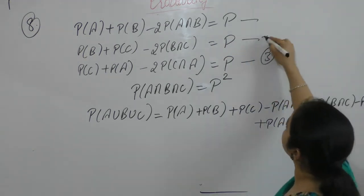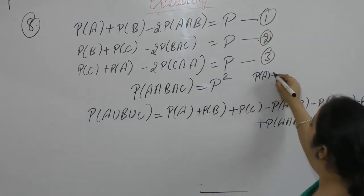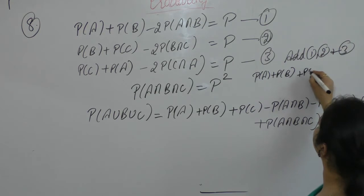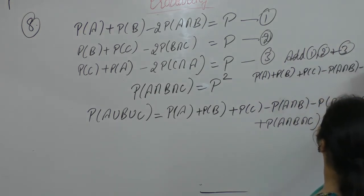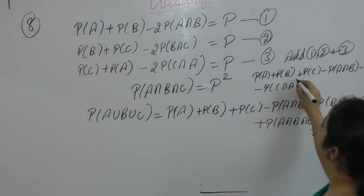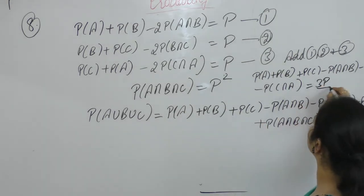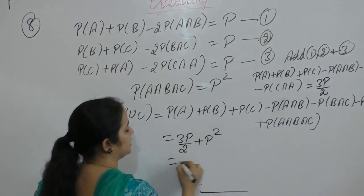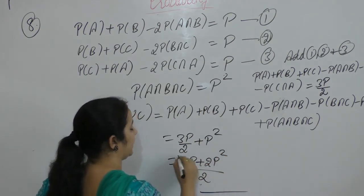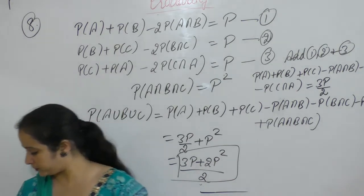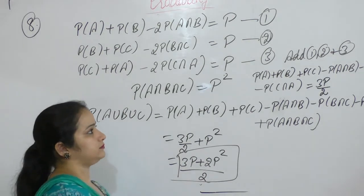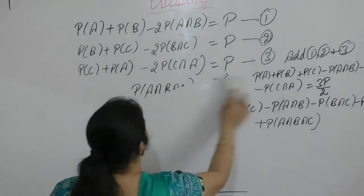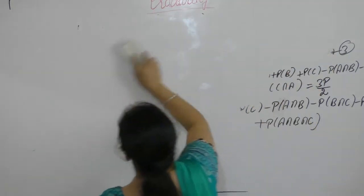Now adding all three equations 1, 2, and 3, we get probability A plus probability B plus probability C minus probability A intersection B minus probability B intersection C minus probability C intersection A. P plus P plus P is 3P, and when divided by 2 it becomes 3P by 2. So 3P by 2 plus P squared gives us 3P plus 2P squared by 2. This is our answer. Note it down.